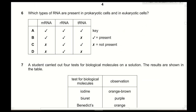Question 6: Which types of RNA are present in prokaryotic cells and eukaryotic cells? Both need to synthesize proteins, so mRNA is needed for transcription and tRNA is needed for translation — both must be present. Additionally, both contain ribosomes (eukaryotes have both 70S and 80S; prokaryotes have 70S), and ribosomes are made from ribosomal RNA and ribosomal proteins. Therefore ribosomal RNA must also be present, and the answer is A.